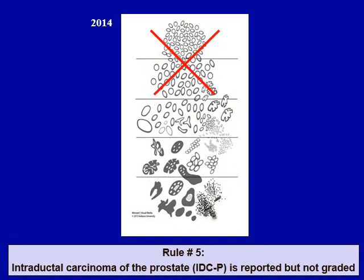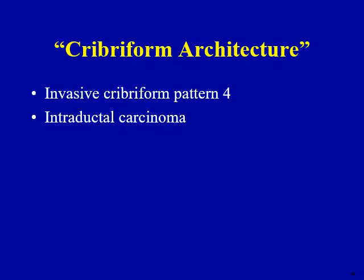Rule number five: intraductal carcinoma of the prostate is reported but should not be Gleason graded. An important thing to remember is that many European studies and contemporary literature combine invasive cribriform Gleason pattern four and intraductal carcinoma as a single cribriform architecture category, which is a logical choice as both are associated with cribriform morphology and both are independently associated with adverse outcomes.